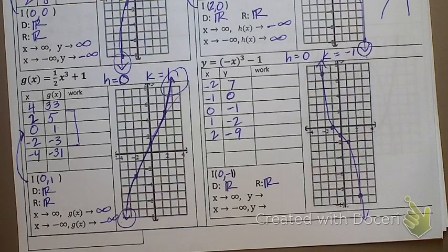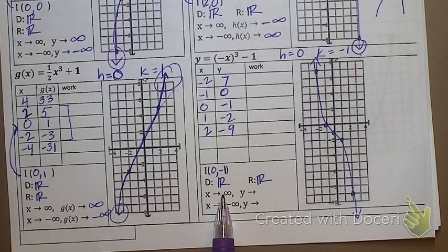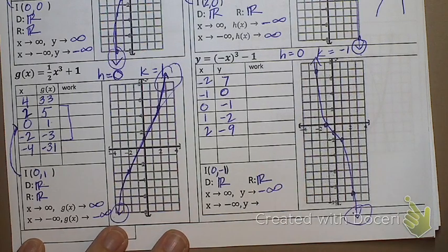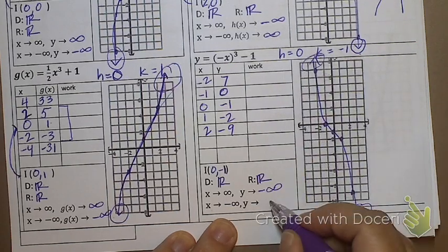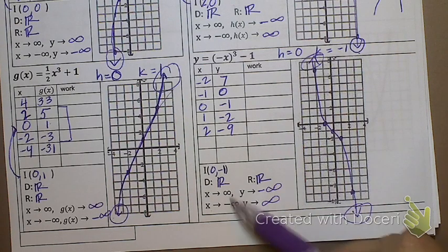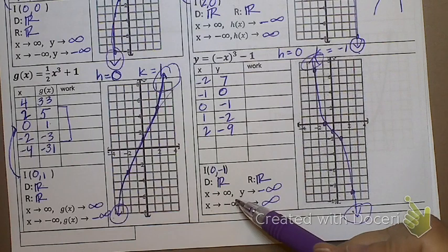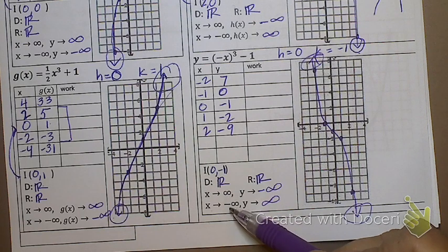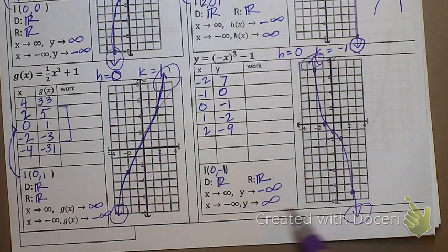End behavior for this one: as x approaches infinity (right side), it's going down, so negative infinity. As x approaches negative infinity (left side), it's going up, so positive infinity. I read through the notation carefully every time because sometimes the positive side of x isn't listed first — they might ask about the negative side of x before the positive side, so you need to know what each part means.